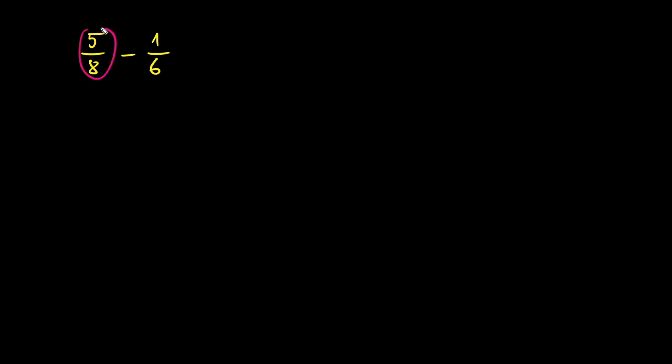Now we multiply the first fraction by the denominator of the second, and the second by the denominator of the first. So we multiply the first fraction by 6 over 6, and the second fraction by 8 over 8.